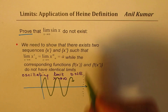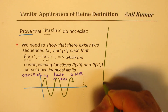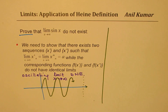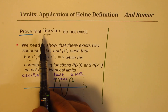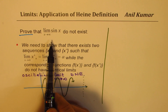With that in mind, I'd like you to pause the video and find two sequences whose limits are the same, but for which sine of that sequence will not have the same value. If you can do that, then you have proved this particular example.